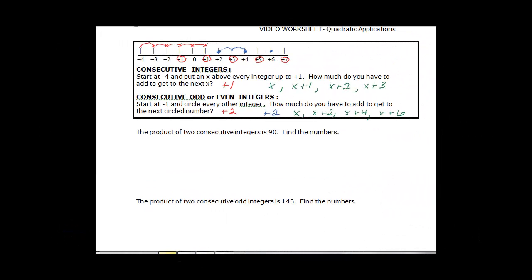Okay so let's do some work then. The product of two consecutive integers is 90.